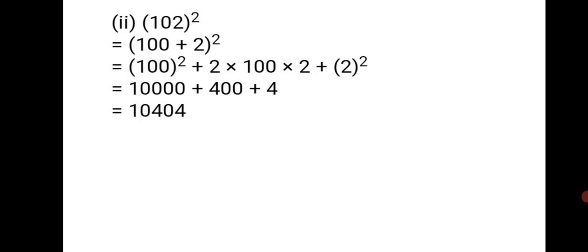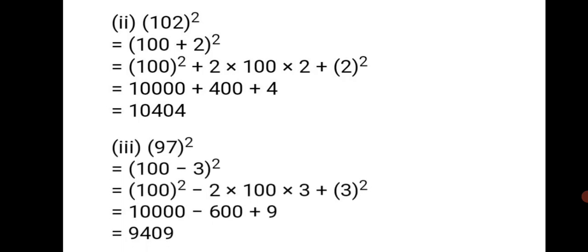You just break up the number so you get something close to 100 or 1000 in addition or subtraction, then apply the formula. Third sum: 97² = (100 − 3)². Applying (a−b)²: 100² − 2×100×3 + 3² = 10,000 − 600 + 9 = 9,409.